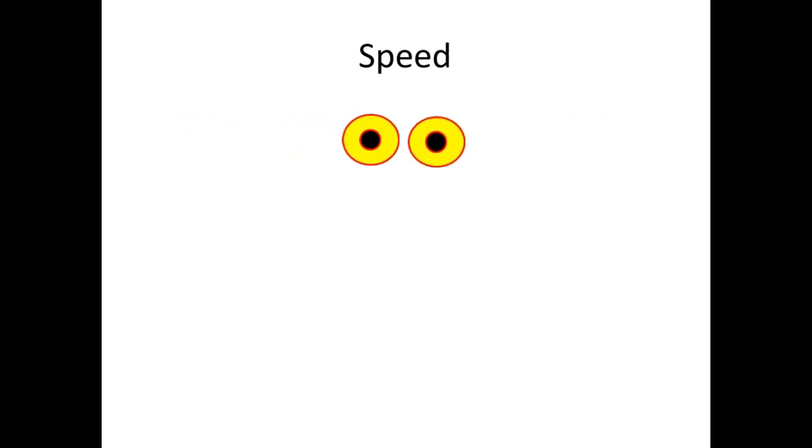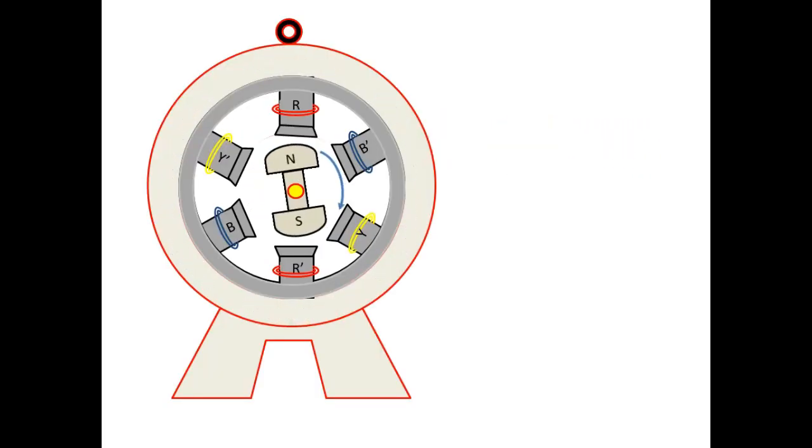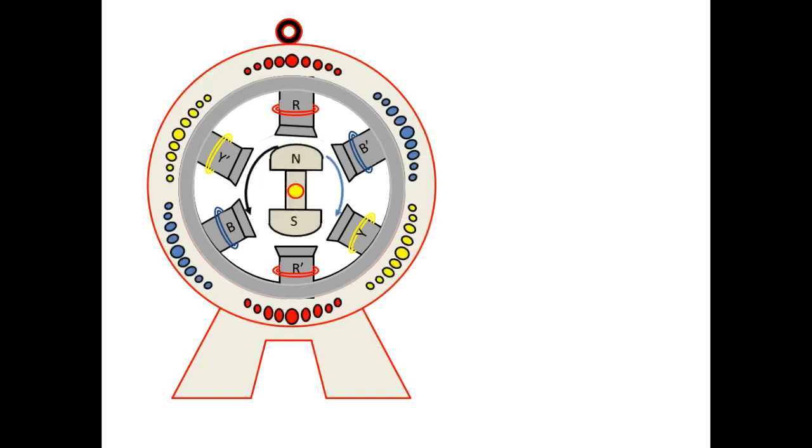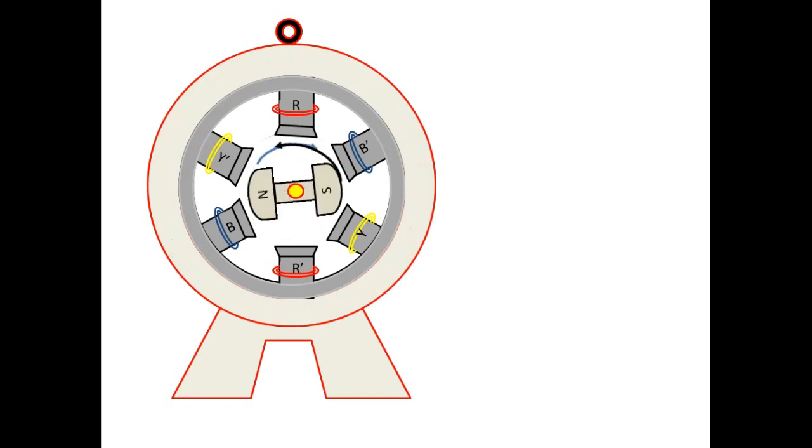Let us consider the two objects with 20 kilometer per hour speed moving in opposite direction. Then if we take any one object as a reference for checking the speed of the object it reaches the other object with additional of these two speeds that is 20 plus 20 it experiences 40 kilometer per hour. The same way in rotor also the rotor and theta dash having same speed and they are in opposite direction.